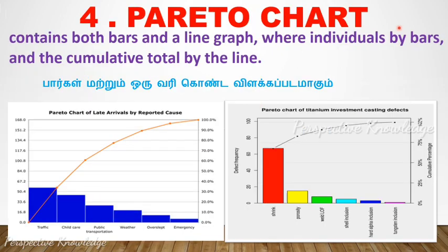The fourth tool is the Pareto Chart. It contains both bars and a line graph, where individual values are represented by bars and the cumulative total by the line. The Pareto chart follows the 80-20 rule.